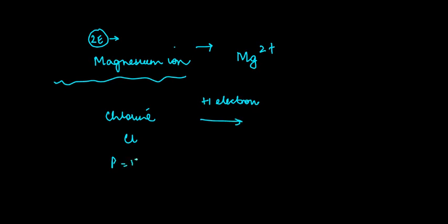the chlorine will have more number of electrons than the protons. Normally, normally the protons out here are 17, and the electrons are 17 as well. These are positive, these are negative. But when you add one electron over here, the positives remain at 17.